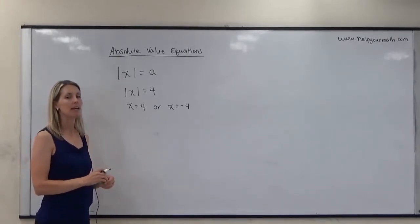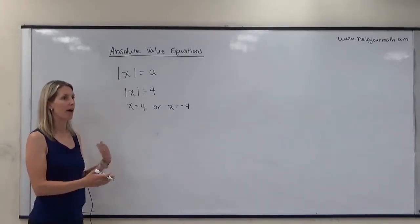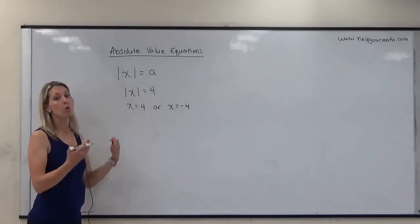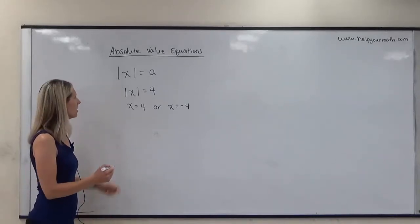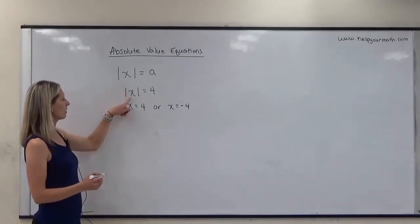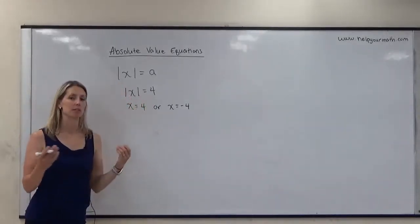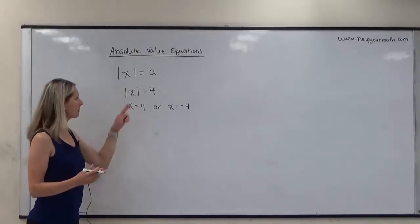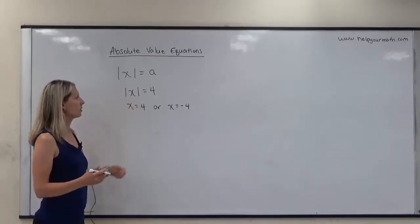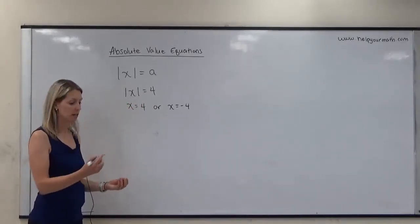Now we'll discuss how to determine whether there are two solutions or some other number of solutions. In the example shown, the absolute value of something was equal to something positive. Anytime the absolute value equals a positive number, there are always going to be two cases.